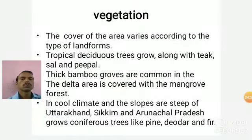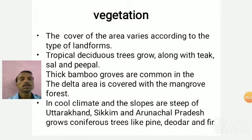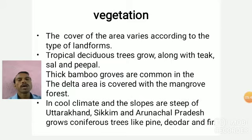Now, vegetation — the forest cover of the areas varies according to the types of landforms. Tropical deciduous trees grow along with teak, sal, and peepal trees in the mountainous regions. Thick bamboo groves are common in the delta areas like West Bengal, and the Sundarbans delta areas are covered with mangrove forest. In the cool climate and steep slopes of Uttarakhand, Assam, and Arunachal Pradesh, trees like pine, deodar, and fir grow because of the cool atmosphere and snowfall in the hills.